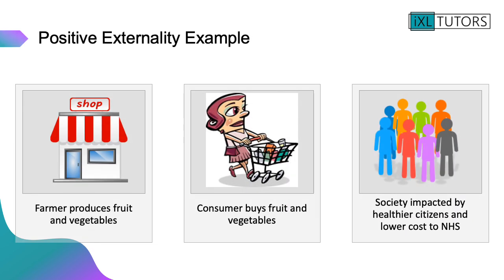An example of a positive externality: a farmer produces fruit and vegetables, a consumer buys them, and society becomes healthier as a result. Citizens are healthier, there's a healthier workforce, and there could be a lower cost to the NHS if citizens are more healthy.